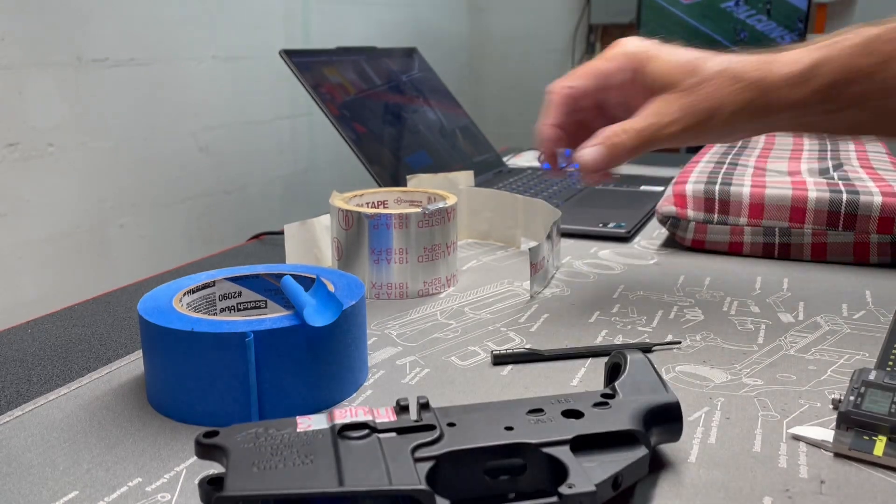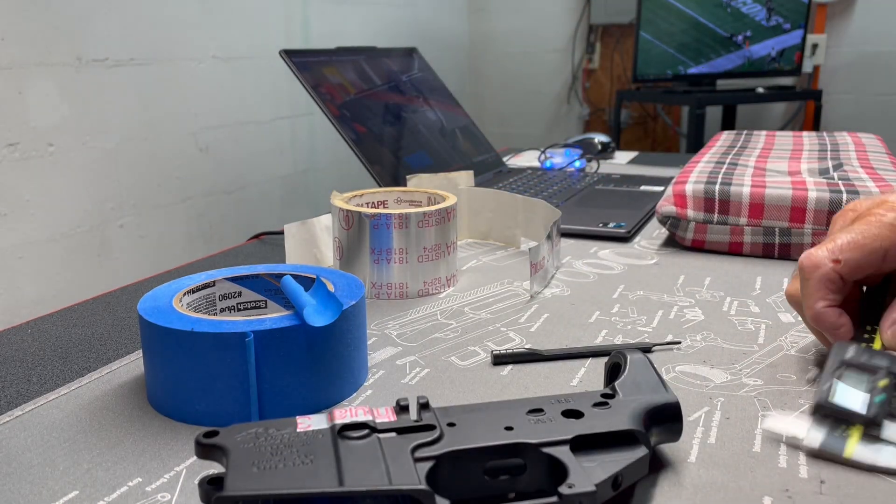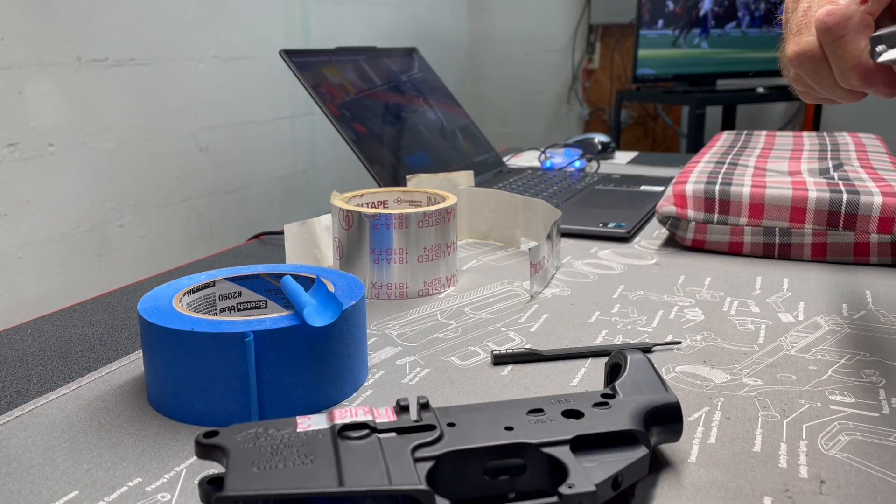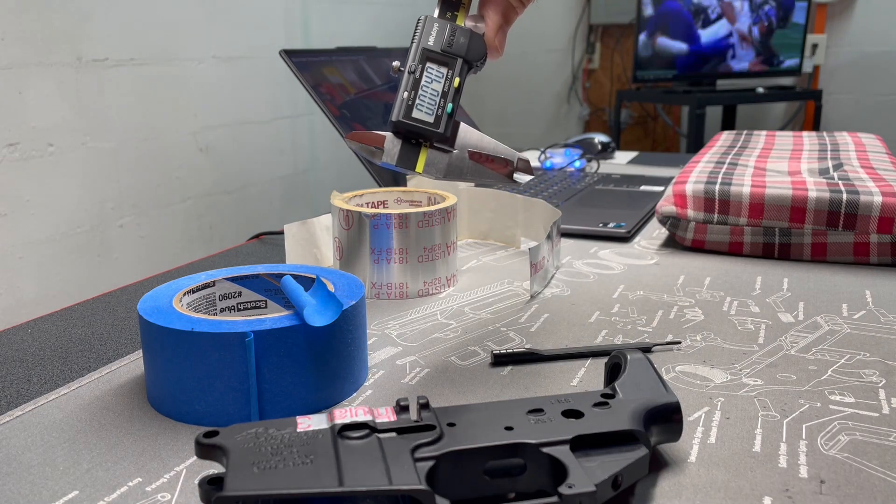All right, let's take some measurements here. Let's measure the aluminum tape. Aluminum tape measures 4 thousandths thick.